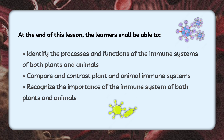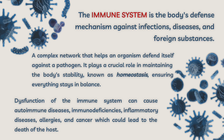So why is our immune system so important? Is it because it fights back viruses and bacteria? Well, technically yes — but there is more to it than simply killing germs. We call these germs pathogens, and our immune system is encoded to fight off these intruders. The immune system is the body's defense mechanism against infections, diseases, and foreign substances — a complex network that helps an organism defend itself against a pathogen. It plays a crucial role in maintaining homeostasis, ensuring everything stays in balance. Think of it as the military, protecting other systems from foreign harm such as pathogens.